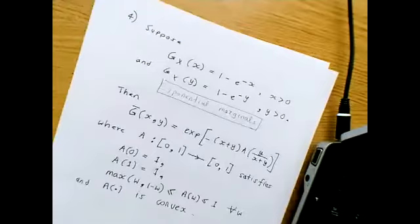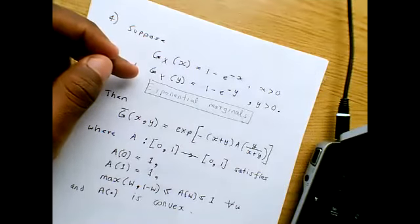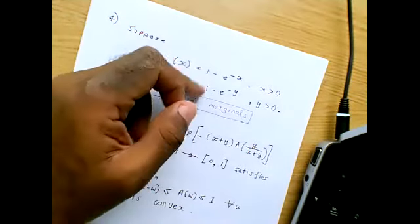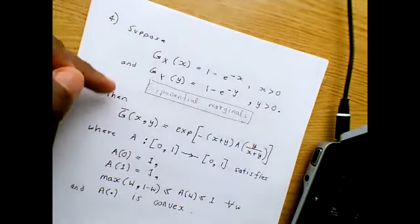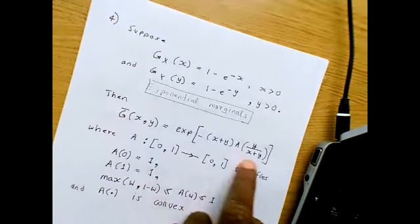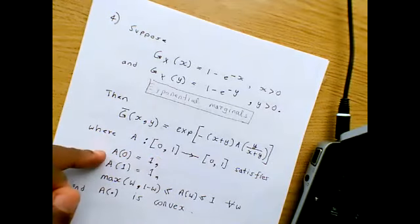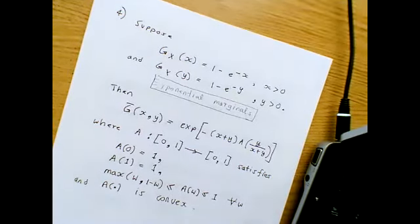The final representation from Tuesday is: if the marginals of G are exponential — these are the CDFs of an exponential distribution — then the possible forms for G-bar, the survival function corresponding to G, can be expressed in a form where A is a function from the unit interval to the unit interval satisfying the same four conditions. So those are the four representations I talked about on Tuesday.